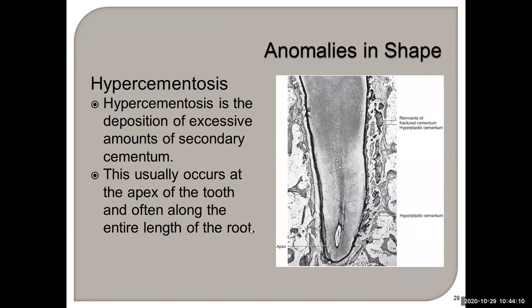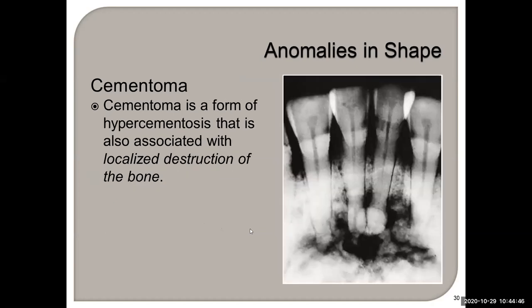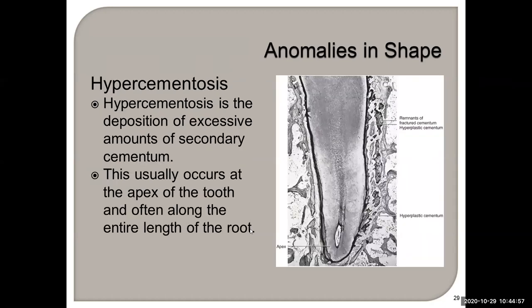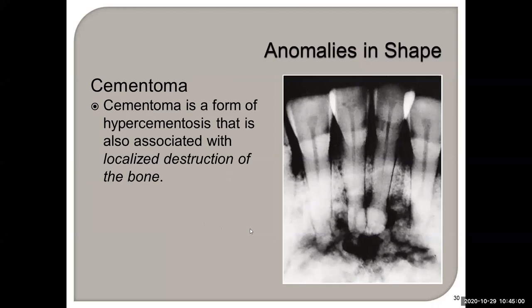Moving on to anomalies in shape — hypercementosis. This is excess deposits of cementum that usually occur at the apex of the tooth, and often along the entire root. It occurs more at the apex because of the cellular cementum located in the apical third of the root. A cementoma is a form of hypercementosis but is associated with the destruction of bone, whereas hypercementosis does not destroy bone.